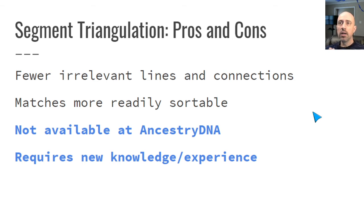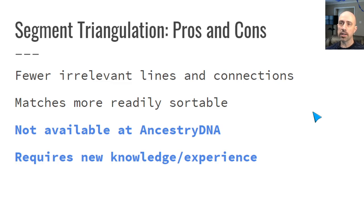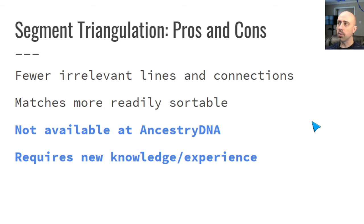Pros and cons of segment triangulation: you're really eliminating a lot of the irrelevant lines and connections. It's less messy than matchlist triangulation, much more focused, matches are easier to sort, and you can cut through a lot of clutter. Downsides: this is totally unavailable at AncestryDNA. Segment triangulation is not a possibility there, unfortunately. Hopefully tools that help us will appear in the future — people will have to learn about triangulation, see the benefits, and demand them at Ancestry. Another downside: it's not as easy to jump right in without some new knowledge and experience, but I really don't think it's inaccessible to most people.